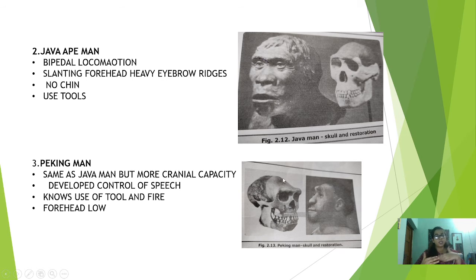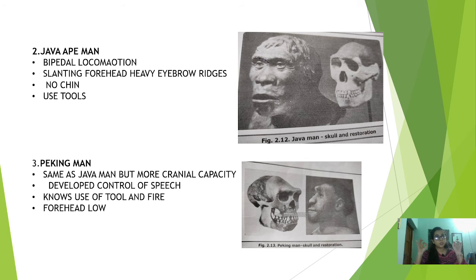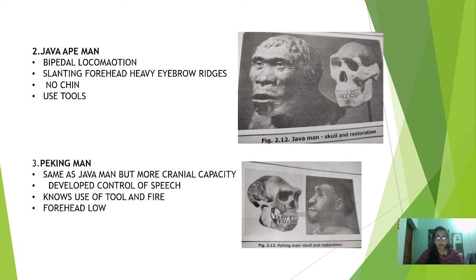Then comes the Peking man. There is not much difference between the Java ape man and the Peking man, but one important point is that the cranial capacity increased in the Peking man, and they developed control of speech — a very important development. Before this there was no communication; gradually due to evolution they started controlling their speech and communicating among group members. They also used tools as well as fire — they knew how to use fire. Their forehead was low.